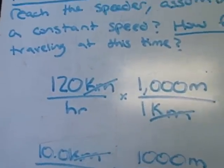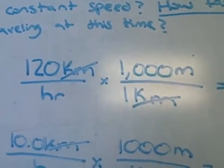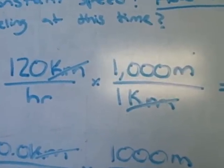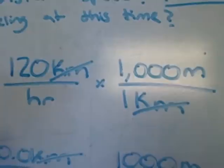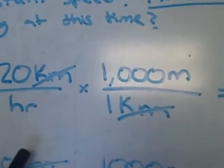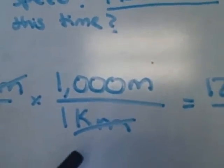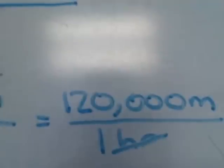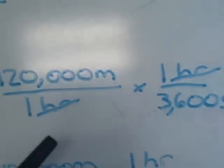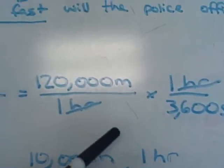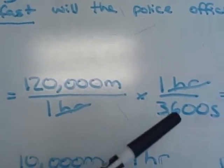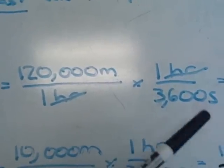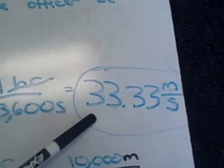The first step is to convert the kilometers per hour and the kilometers per hour per second into meters per second and meters per second per second. You start with 120 kilometers per hour and multiply by 1,000 meters per kilometer, because there are 1,000 meters in one kilometer. That leaves you with 120,000 meters per hour. Then you convert hours to seconds — since there are 3,600 seconds in one hour, you multiply by 1 over 3,600, leaving you with a velocity of 33.33 meters per second.